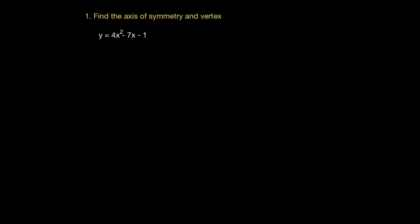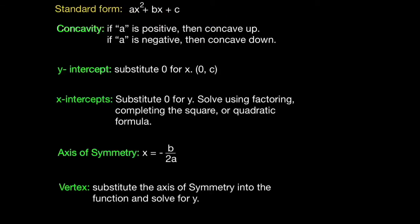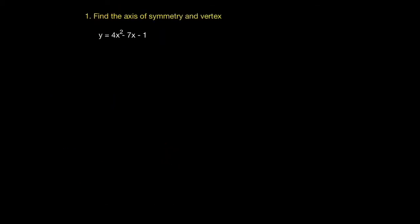Example number one: find the axis of symmetry and the vertex. To find the axis of symmetry, we need to calculate negative b all over 2a. I'll begin by identifying my key values. The a term is 4, the b is negative 7, and the c is negative 1.